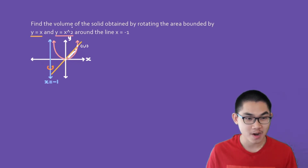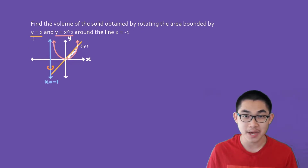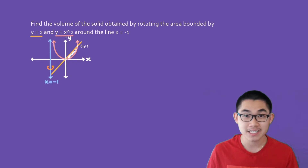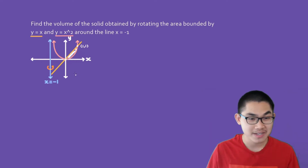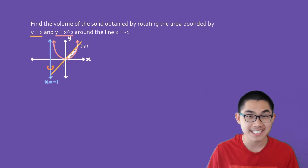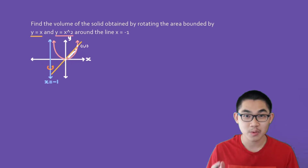Find the volume of the solid obtained by rotating the area bounded by y equals x — that's going to be the yellow line — and y equals x squared. If we take the area between these two curves and rotate it around x equals negative 1, this vertical line, what kind of three-dimensional solid are we going to get?